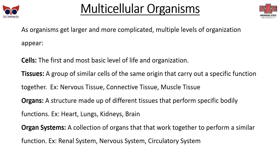As organisms get larger and more complicated and become multicellular, they start having multiple levels of organization. First is just the cell — nerve cells, bone cells, all sorts of different kinds. Then you group those into tissues: cells with the same origin that carry out a specific function, such as nervous tissue, muscle tissue, and connective tissue. Then groups of tissue form organs — structures made of different tissues that perform specific bodily functions, like your heart, lungs, kidneys, and brain. And then you have organ systems, where organs work together to perform a similar function, like the renal system for waste removal, the nervous system for nerve impulses, and the circulatory system for blood flow and oxygen management.